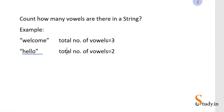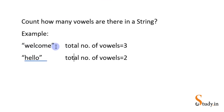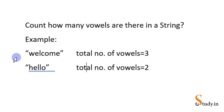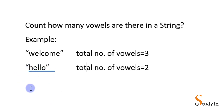Let's suppose we have a string called 'welcome'. We have to find out how many vowels are there in the string. As you can see there are three vowels: e, o, e — so the total number of vowels is three. Similarly, for the string 'hello', there are two vowels: e and o.